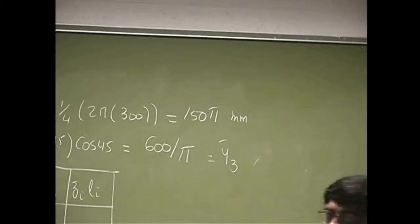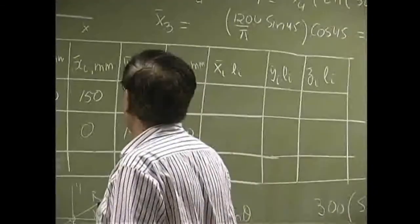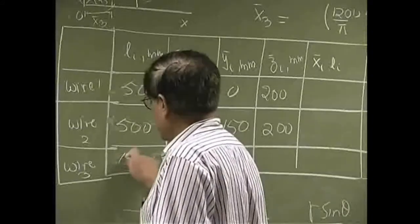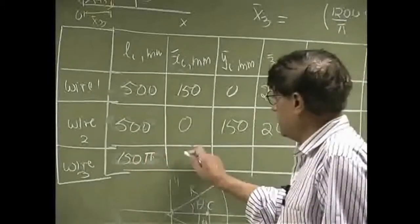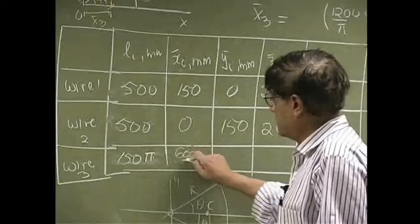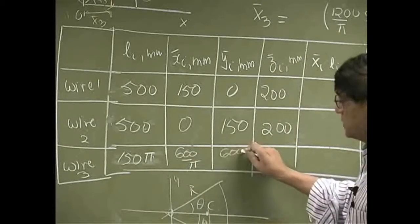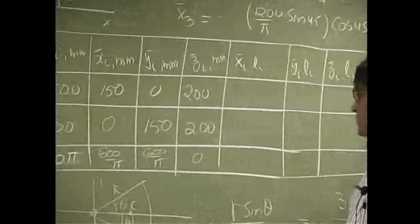We know that's also y3 bar, so we have everything we need. This thing here is 150 pi, this thing here is 600 over pi, this thing here is another 600 over pi, and this thing here is 0.